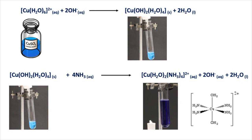Both the coordination number and the oxidation state do not change in this reaction. The oxidation state of copper is still +2 and the coordination number is still 6, because in Cu(H₂O)₆²⁺ we have 6 ligands surrounding the copper 2+ ion forming 6 coordinate bonds, and in Cu(OH)₂(H₂O)₄ there are still 6 coordinate bonds bonded to the copper 2+ ion.